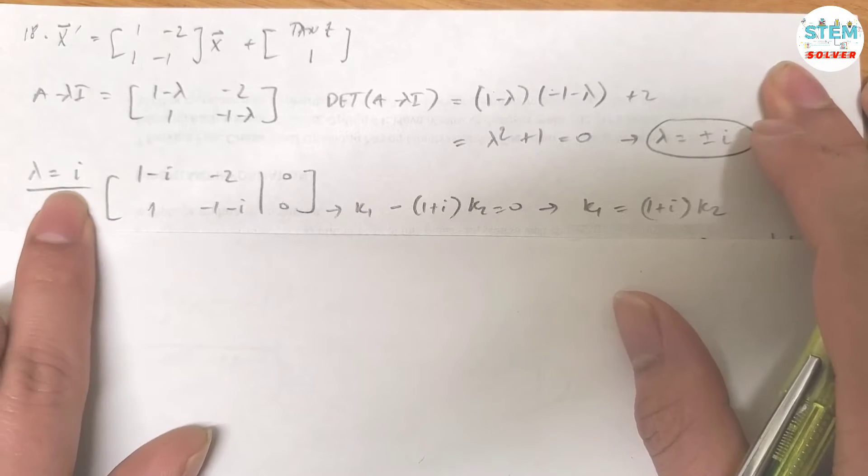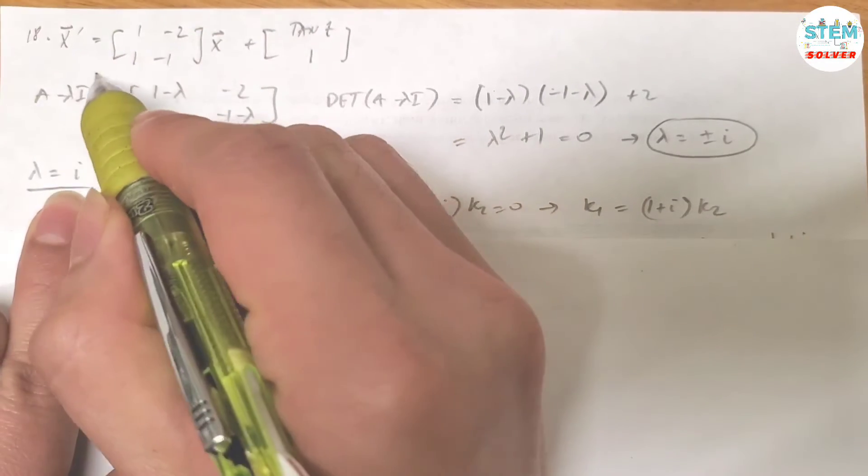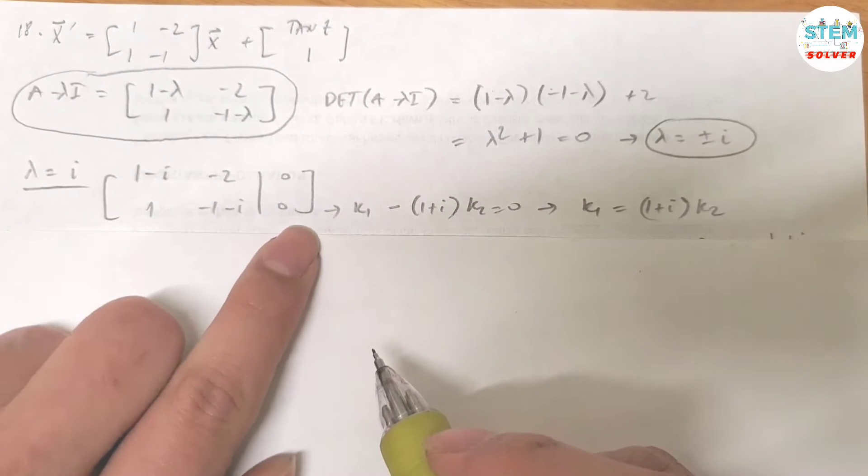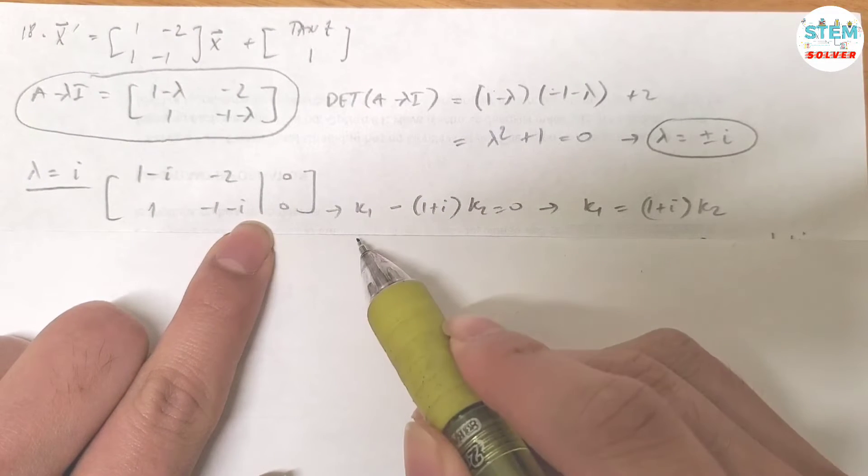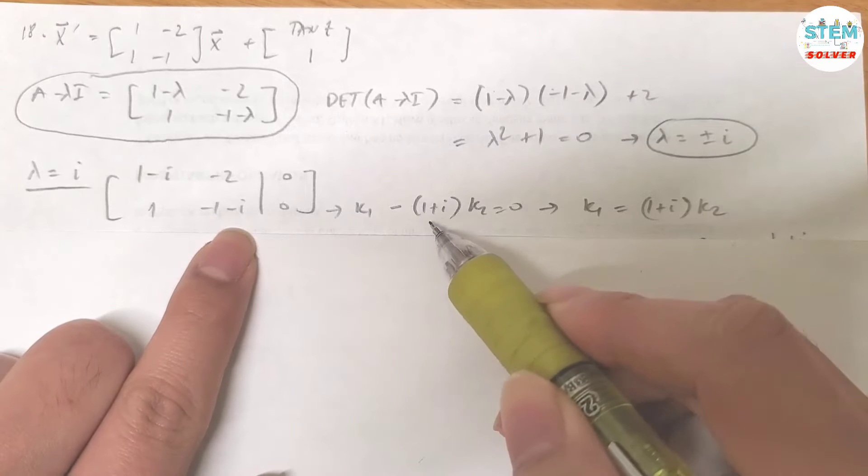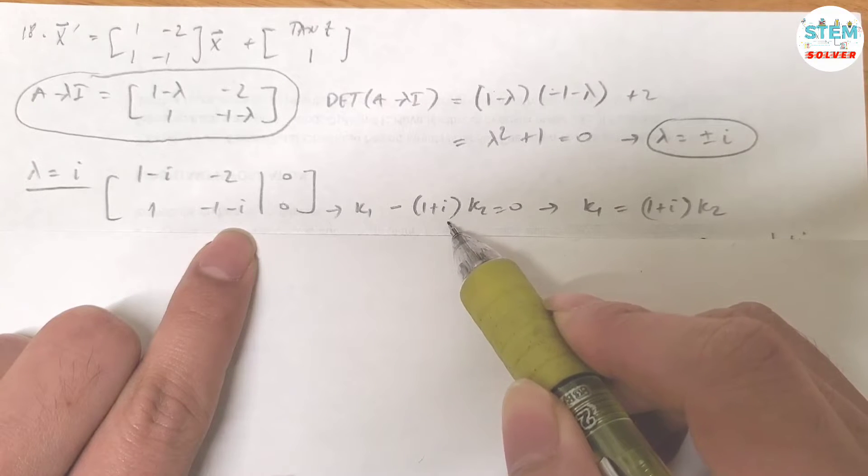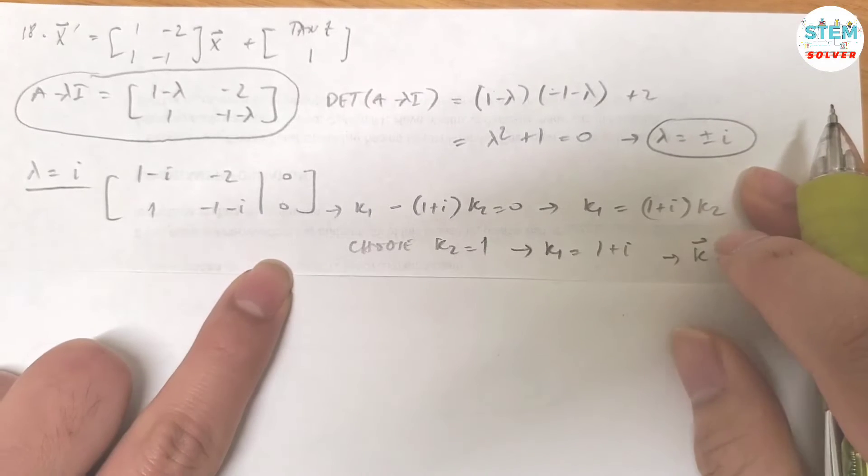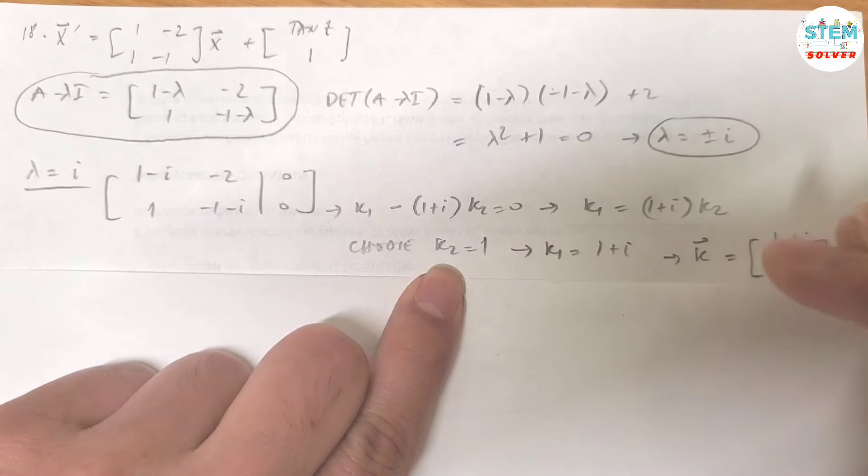Let's take a look at the case when lambda equals i. Plug it into here, it gives you this matrix augmented with 0. From the second equation, you know that k1 equals 1 plus i. I have k1 minus (1 plus i) k2 equals 0. So for k1, I got 1 plus i k2. If I choose k2 as 1, then k1 is 1 plus i.